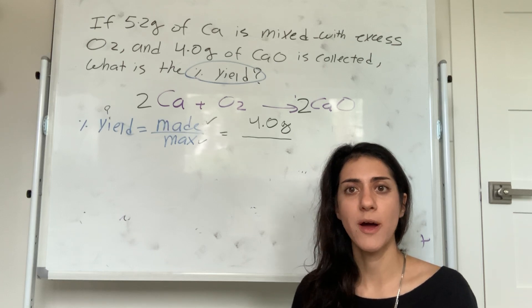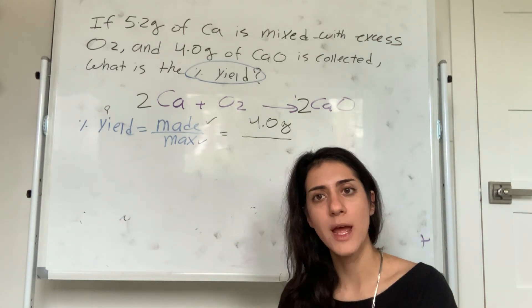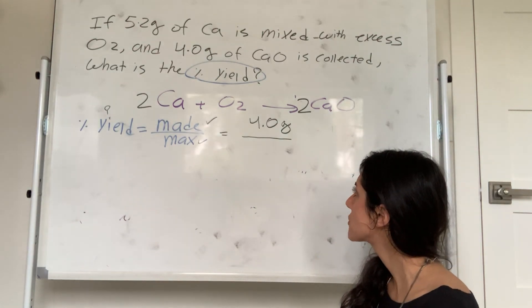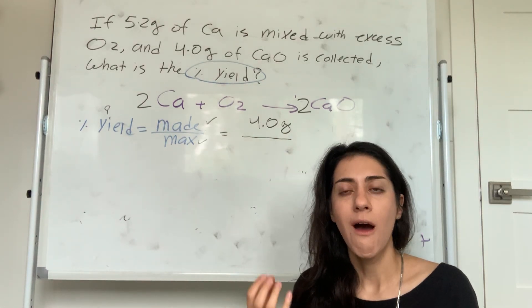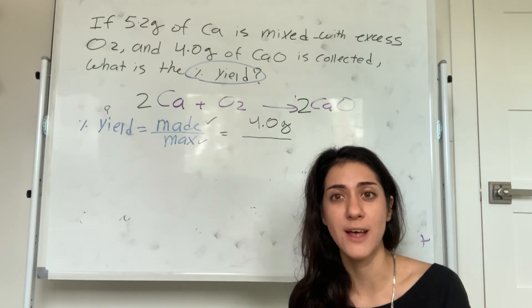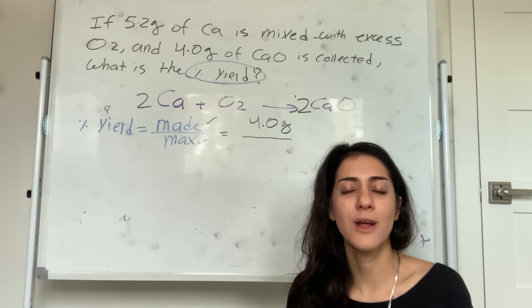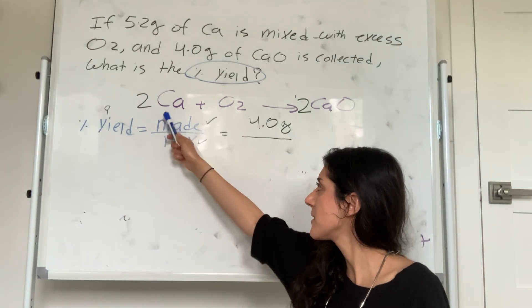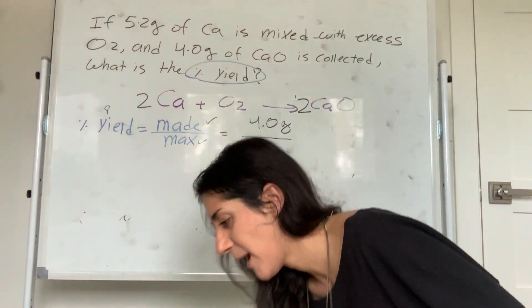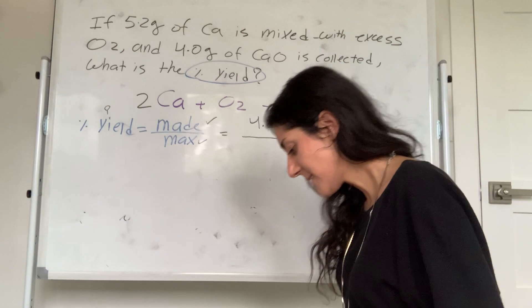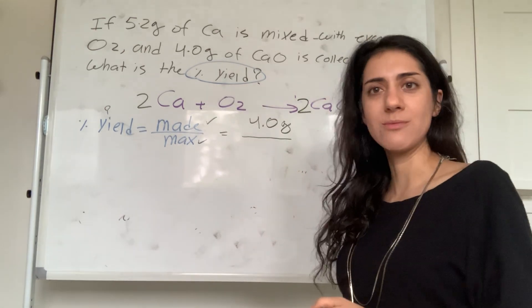What I'm trying to figure out is how much calcium oxide I can make, so I need a mole ratio. Coefficients are the mole ratio — it's 2 to 2: I need 2 moles of calcium to make 2 moles of calcium oxide. The moles of calcium cancel out, I have moles of calcium oxide. Then convert to grams: 1 mole of calcium oxide is 56 grams. I end up with 7.3 grams of calcium oxide — that's the max I can make.